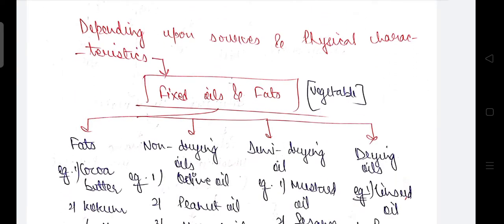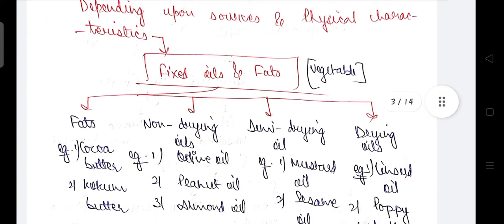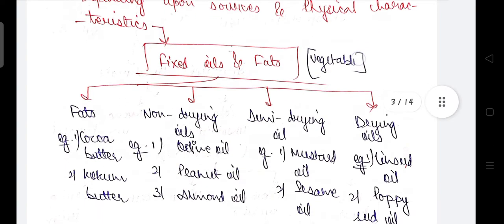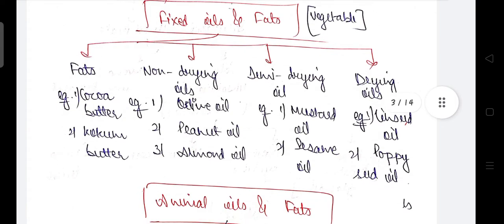Depending upon source and physical characteristics, fixed oils and fats are classified. Vegetable oils are divided into fats, non-drying oils, semi-drying oils, and drying oils. Examples: fats — cocoa butter; non-drying oils — olive oil, peanut oil, almond oil; semi-drying oils — mustard oil, sesame oil; drying oils — linseed oil and poppy seed oil.